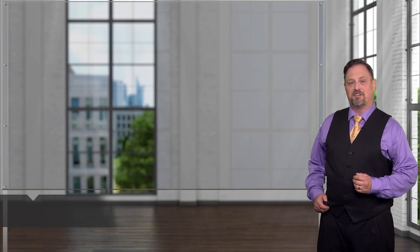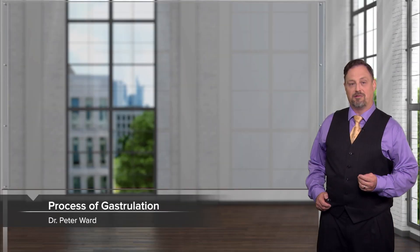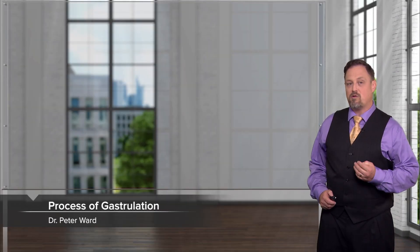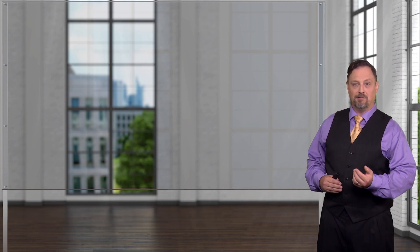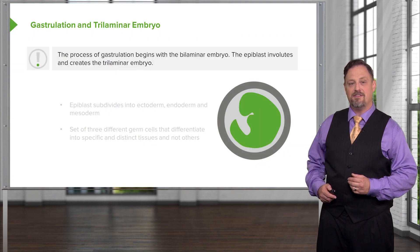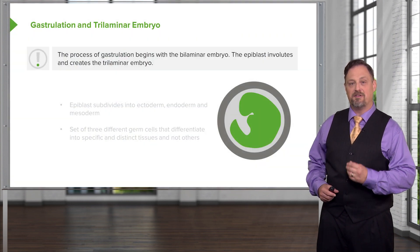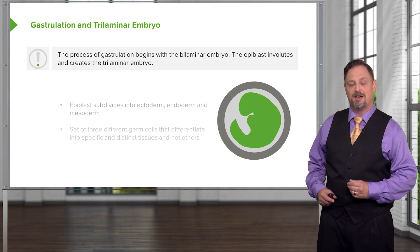In this lecture, we will discuss gastrulation, an incredibly important event in development that brings us from a bilaminar, or two-layered stage, to the trilaminar, or three-layered stage. In this process, we create a series of three specific germ cell layers.